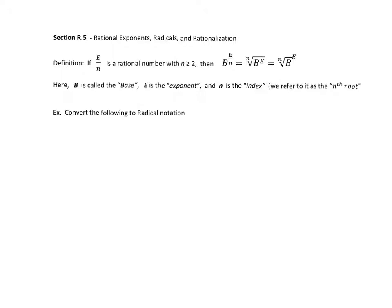So b is what we call our base, e is the exponent, that would be something like x squared where 2 is the exponent, and n is what we refer to as our index, that's the same thing as the nth root if you wrote it in radical form. So let's look at an example.